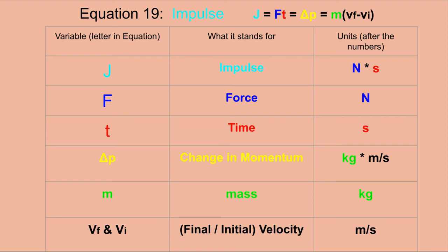Impulse also equals the change in momentum, delta-p, with units of kg·m/s. The letter m is mass in kilograms, and vf and vi are final and initial velocity in meters per second. It's important to subtract correctly: it's vf minus vi, not the other way around.